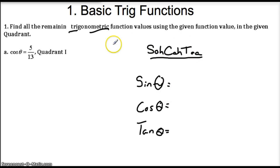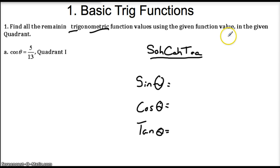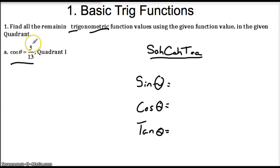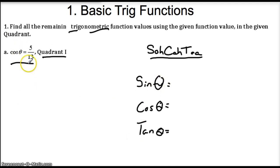Now let's take a look at this question to find the rest of these ratios given the information. We want to find the remaining trigonometric function values using the given function value in the given quadrant. We know the cosine of theta is 5 over 13, meaning the adjacent side over the hypotenuse side is 5 over 13, and this is in quadrant 1. Let's see how we can use this to find the sine, cosine, and tangent of this angle.